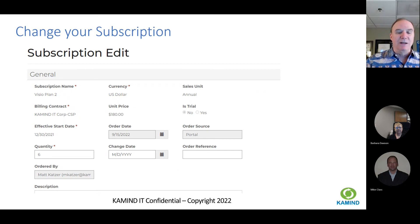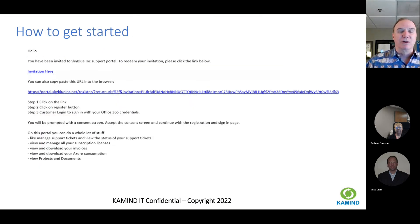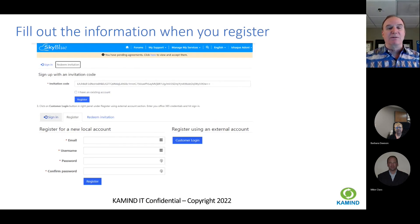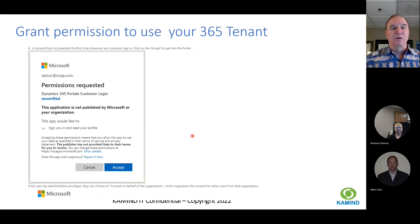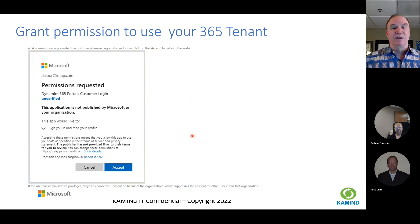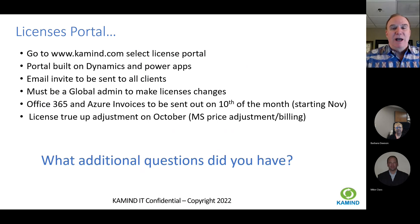To get started, we have sent all of our clients' subscription owners an introduction or invite to the license portal. When you receive the invite, you just click on the URL and fill in the necessary information to set up your account. One thing that sometimes confuses people: you have to grant permissions. What this does is grant permission to the license portion of your Microsoft 365 tenant. If you're using Dynamics CRM, we're not getting full access rights — we're just enabling our license portal implementation on Dynamics CRM to write to your 365 instance. You just accept it and it's very straightforward.